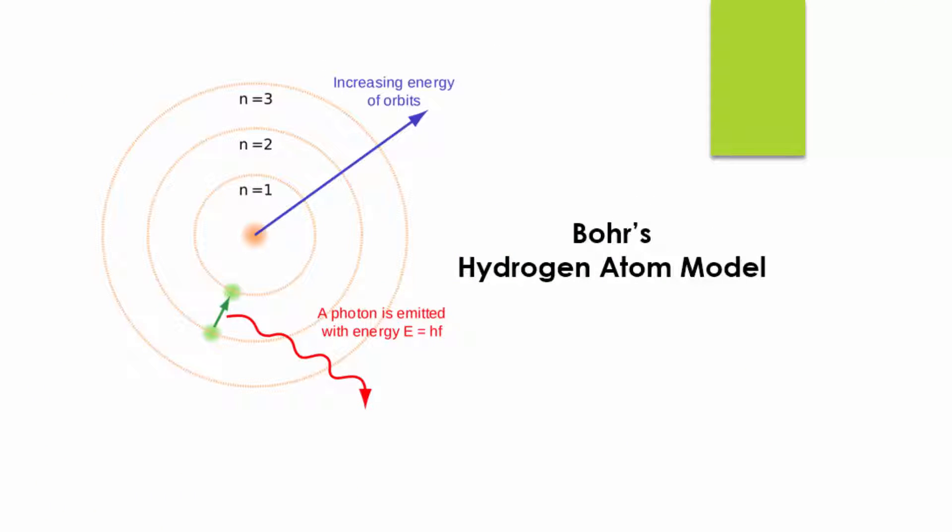Bohr hypothesized that the hydrogen atom electron was restricted to certain well-defined orbits. In other words, Bohr assumed that the orbiting electron could have only certain values of angular momentum or energy level. This is called quantization. Quantization basically means discrete, such that a physical quantity can take some certain predetermined values, but not continuous or arbitrary values.